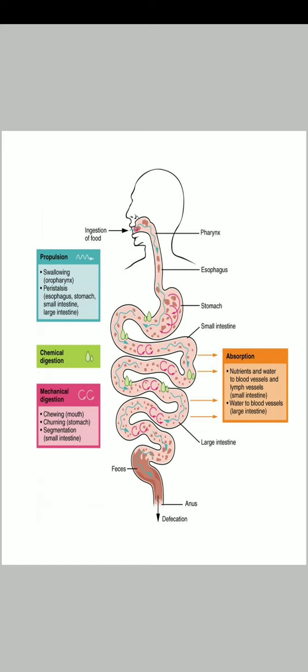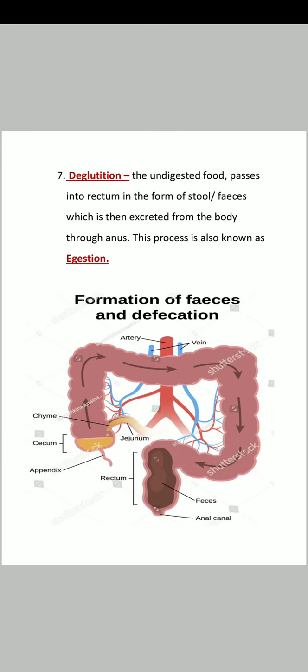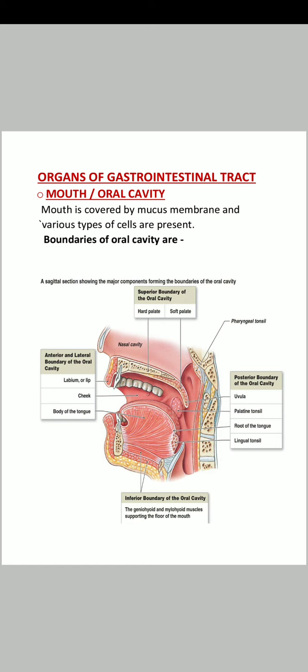After absorption, the excretory undigested material goes from the large intestine into the rectum, then the feces or stool goes into the anal canal and exits. Next, we will see which organs are in our gastrointestinal tract.